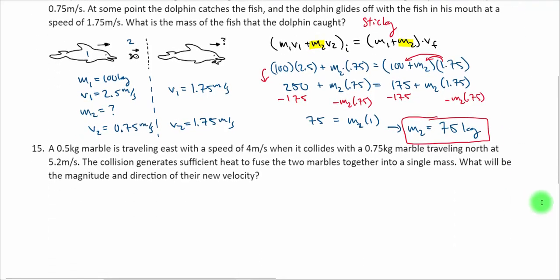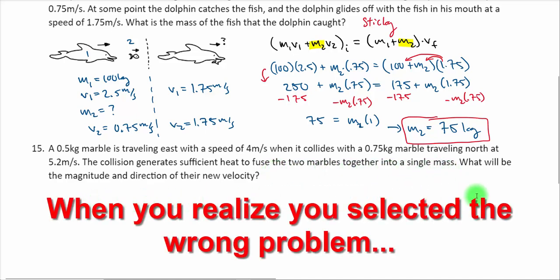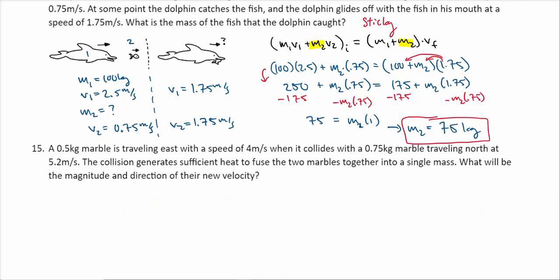Let's take a look at what I've got listed here as number 15. It says a 0.5 kilogram marble is traveling east with a speed of 4 meters per second when it collides with a 0.75 kilogram marble traveling north at 5.2. The collision generates sufficient heat to fuse the two marbles together into a single mass. What will be the magnitude and direction of their new velocity? And as I'm reading that, I'm realizing this is more challenging. So we're going to stop here. This is not reflective of the problems you've got on your assignments. We'll stop here and call it quits. Hope these two problems helped.